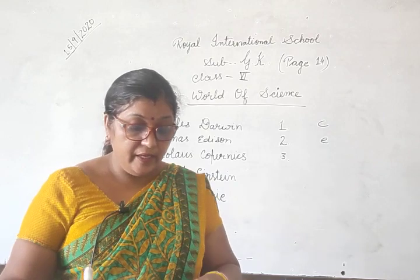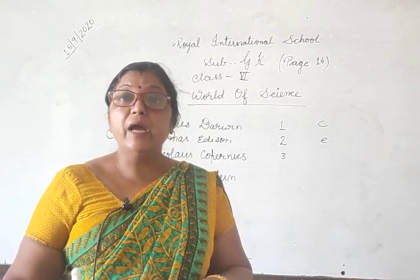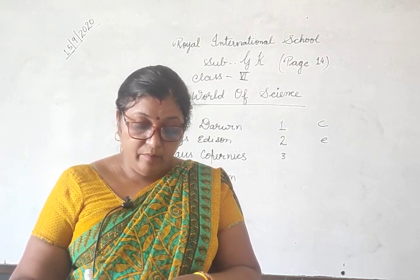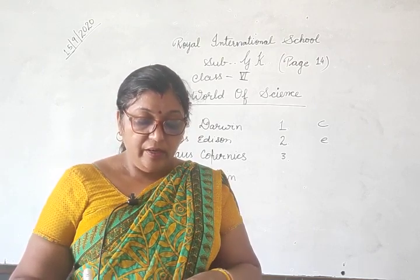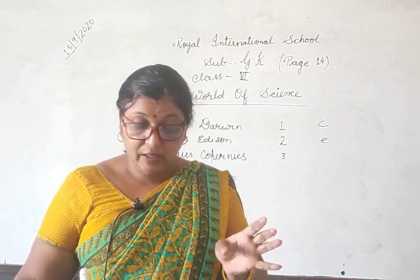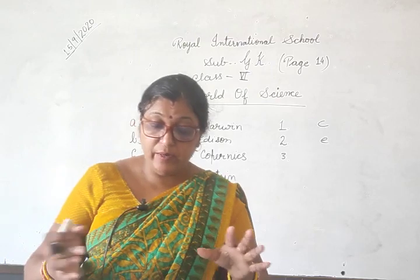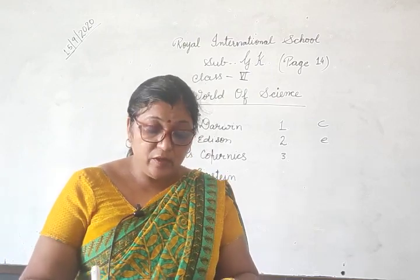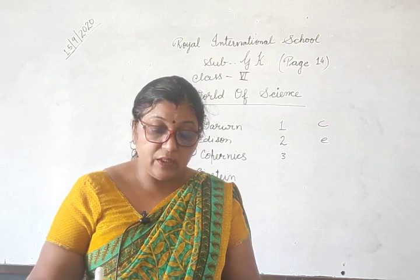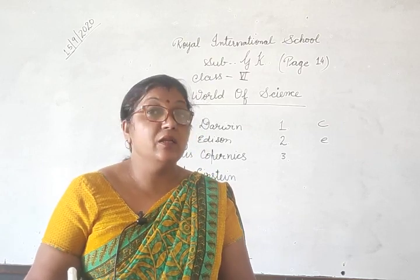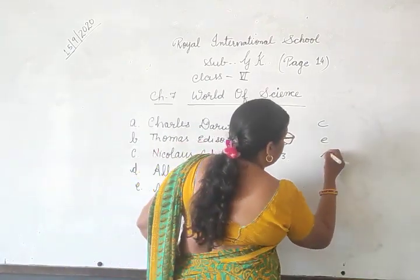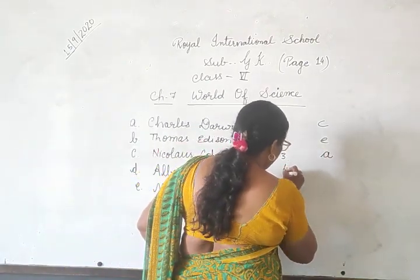Third clue: the revolutionary idea that plants and animals evolve over time by a process called natural selection. Plants and animals evolve over time by a process called natural selection — this is Charles Darwin, which is the first number photo.